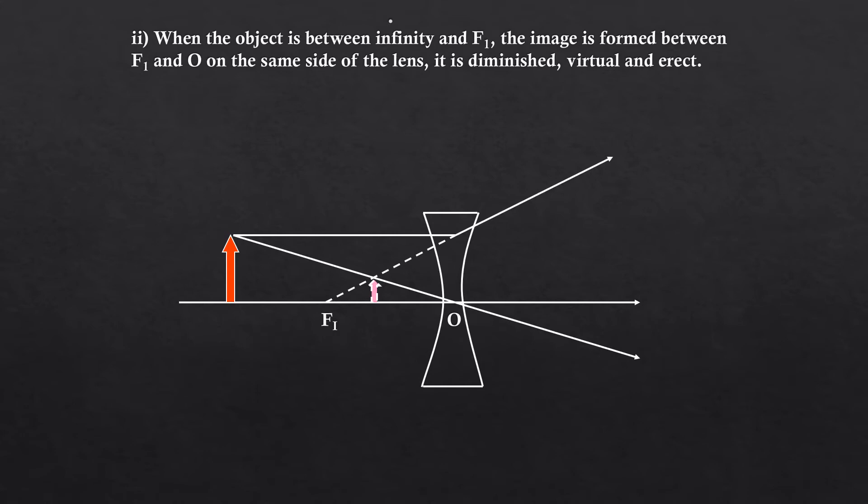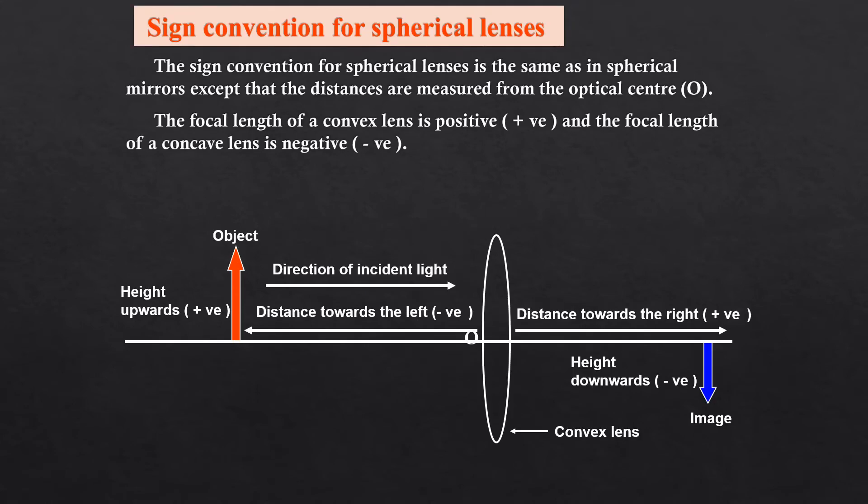So these are the ray diagrams you should remember for concave lens. Now let us move on to the sign convention for spherical lenses. It is similar to that of the concave mirror. The sign conventions are same as spherical mirrors. The difference is that instead of a mirror you have a lens.